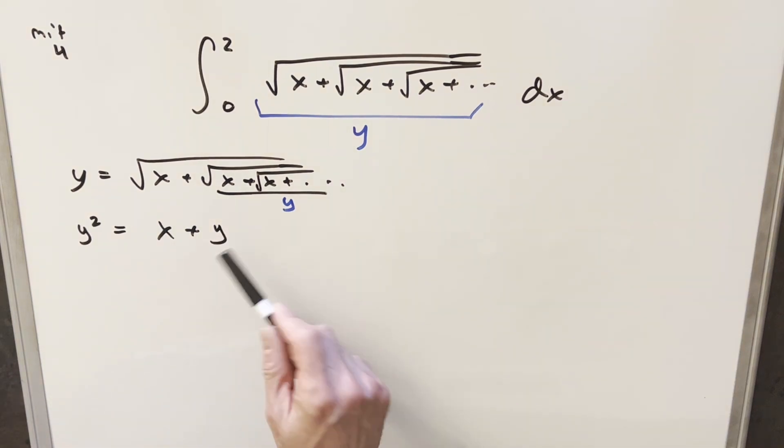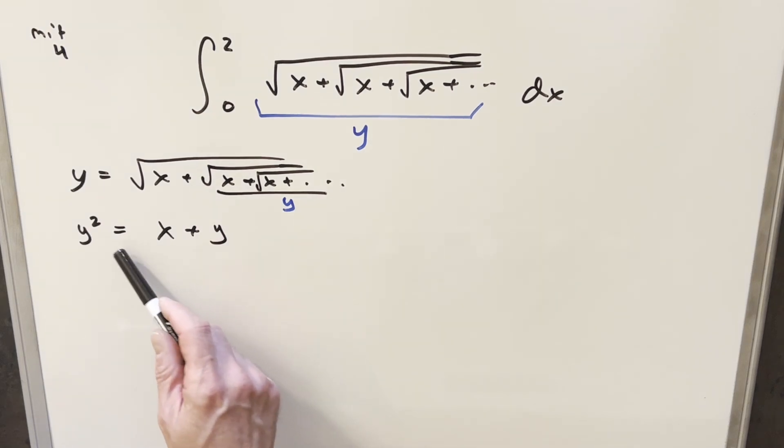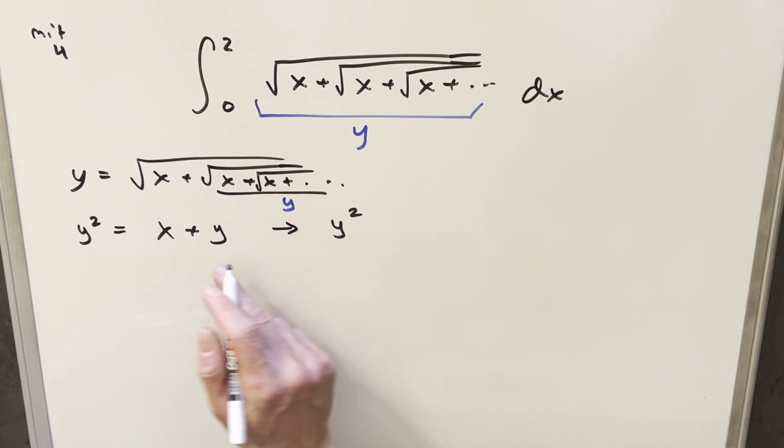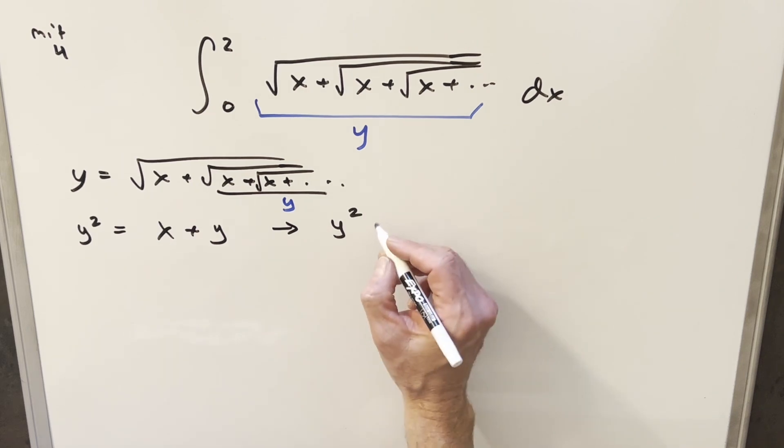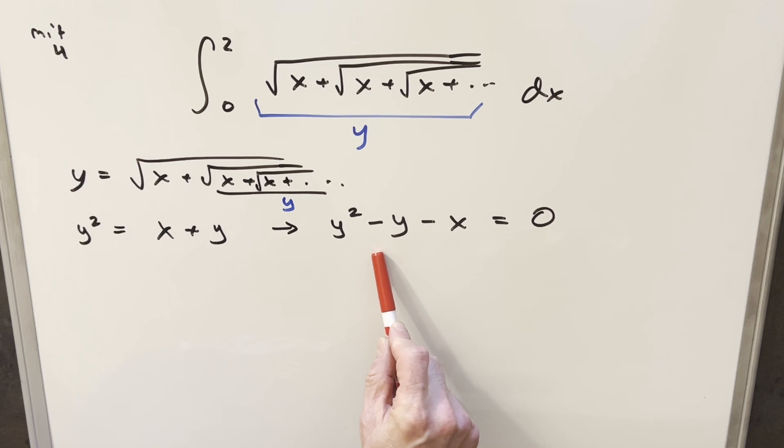I want to find a value for y to rearrange this into something we can integrate. So I need to solve for y in this equation. I'll rearrange by getting everything on one side. Subtracting x plus y, we end up with y squared minus y minus x equals zero. At this point, we just have a quadratic equation in y, so I'll use the quadratic formula to solve for y.